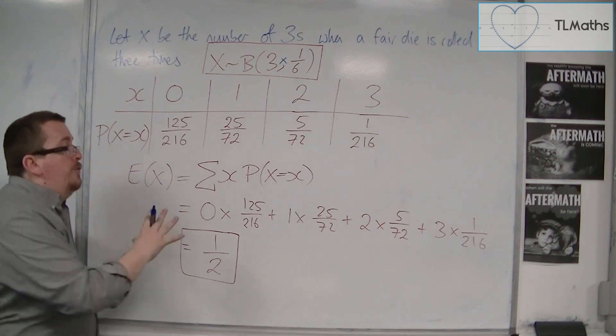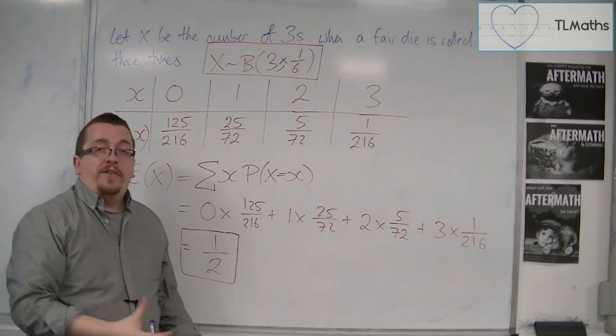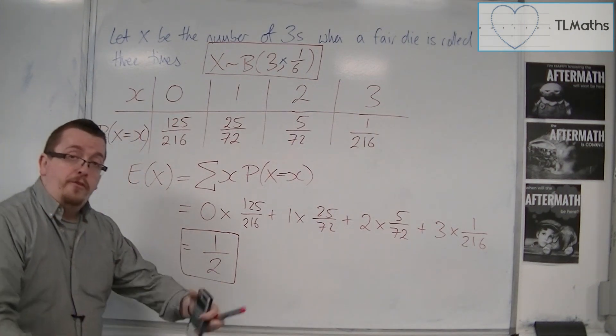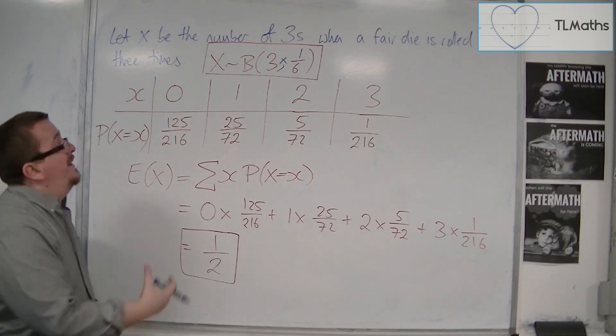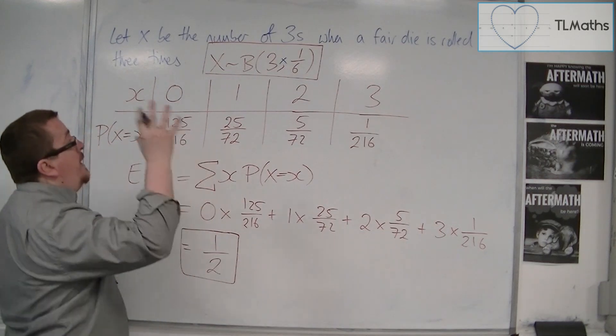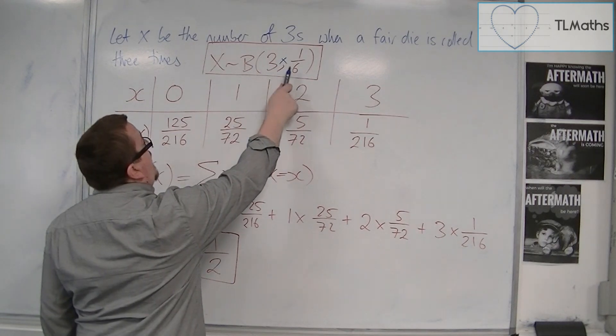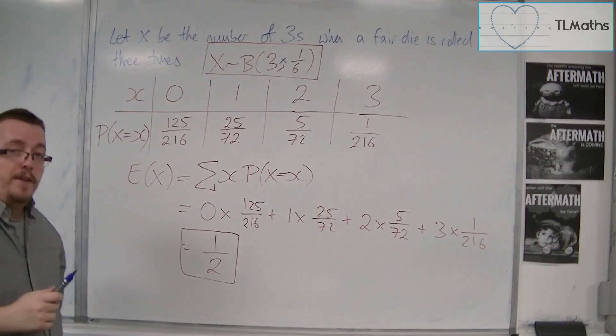So, although this is just one example, and obviously that doesn't form a proof, what I want to show is that actually, if you just multiply the n and the p together, you will get the expected value.